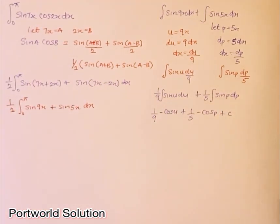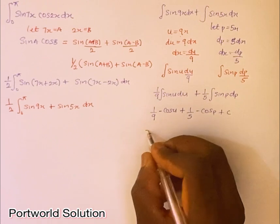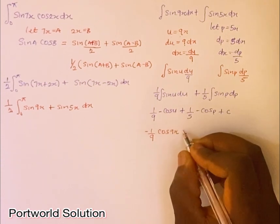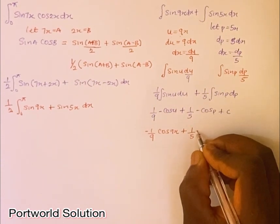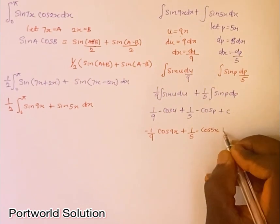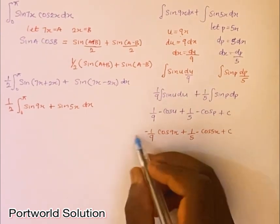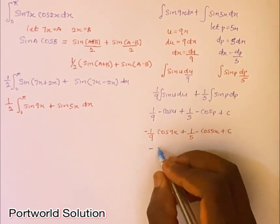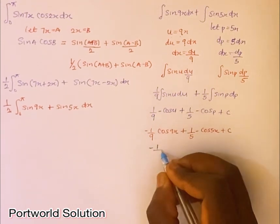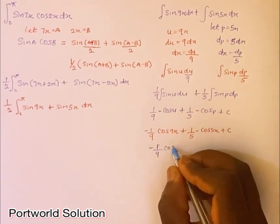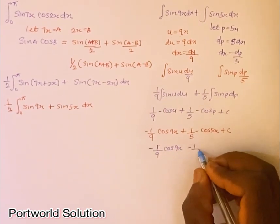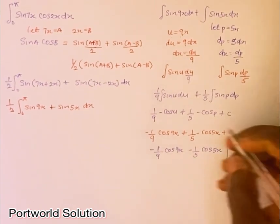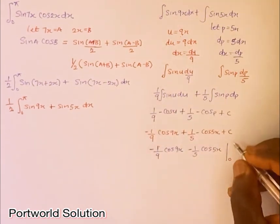Substituting back: u = 9x and p = 5x. The antiderivative is −(1/9)cos(9x) − (1/5)cos(5x) + C. Factoring out the negative, I can write it as −[(1/9)cos(9x) + (1/5)cos(5x)] + C, evaluated from our upper limit π and lower limit 0.